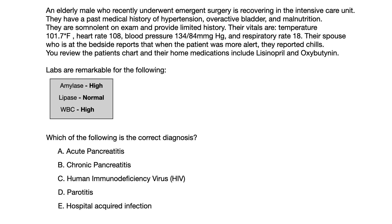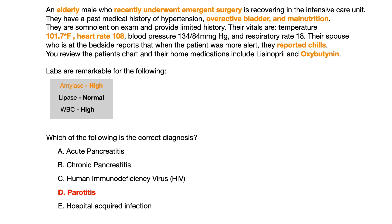The correct answer is choice D, parotitis. I'm going to highlight what you should have been paying attention to in the vignette. We have an elderly patient who recently underwent surgery, has a history of overactive bladder and malnutrition, is showing abnormal vital signs including elevated temp and heart rate, reported chills, and is on oxybutynin at baseline. Amylase level is high.